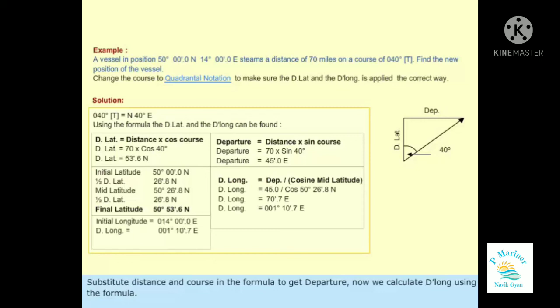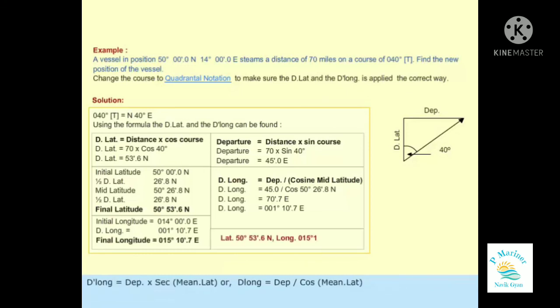Now we calculate DLong using the formula: DLong equals departure times secant of mean lat, or DLong equals departure over cosine of mean lat.